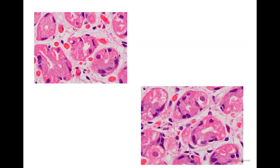In cases where we block acid production by giving proton pump inhibitors, there is hyperplasia of the parietal cells, and the number of parietal cells will be much greater than in a normal gastric gland. In the normal gastric gland the number of parietal and oxyntic cells are largely equal. But in patients who have been taking proton pump inhibitors for a long time and suppressing the acid content, there is compensatory hyperplasia of the parietal cells and they become supernumerary.